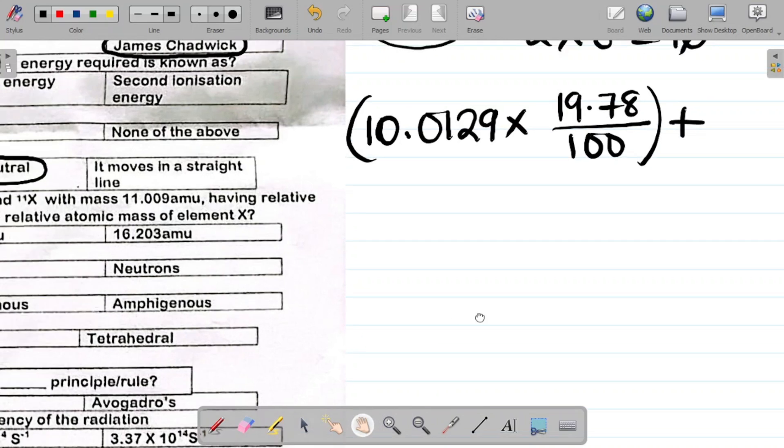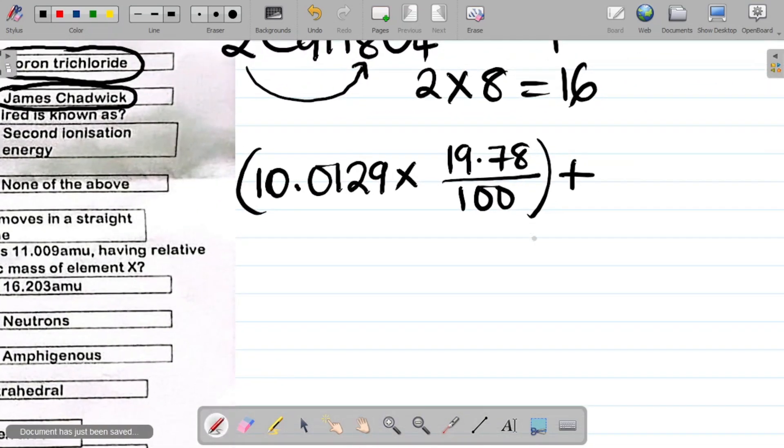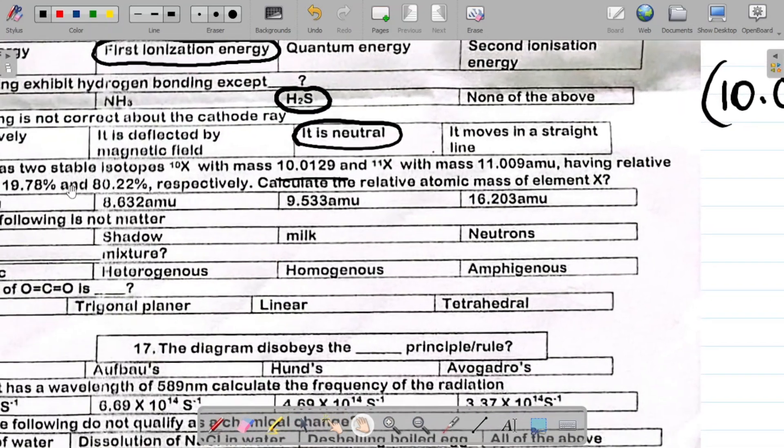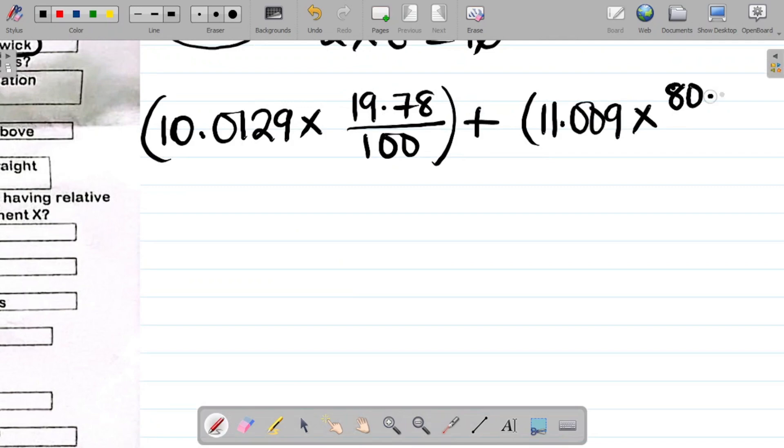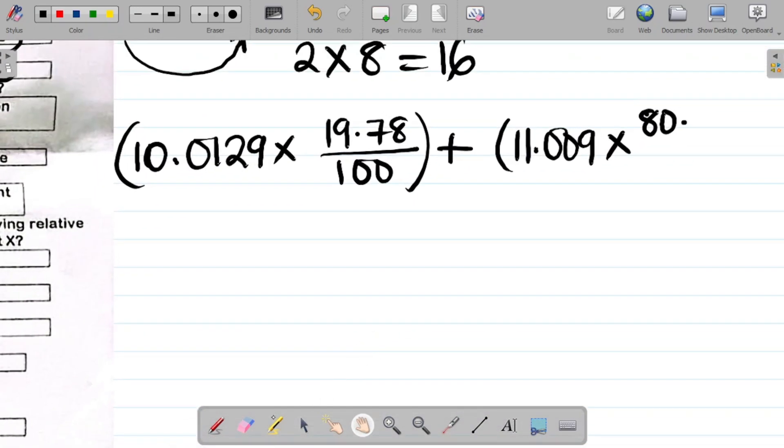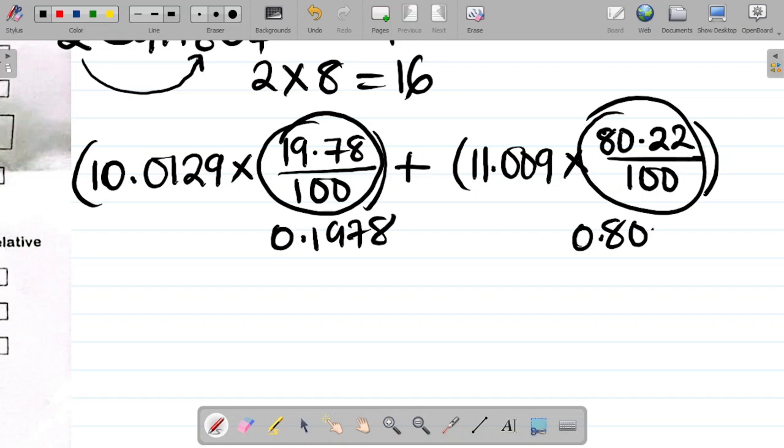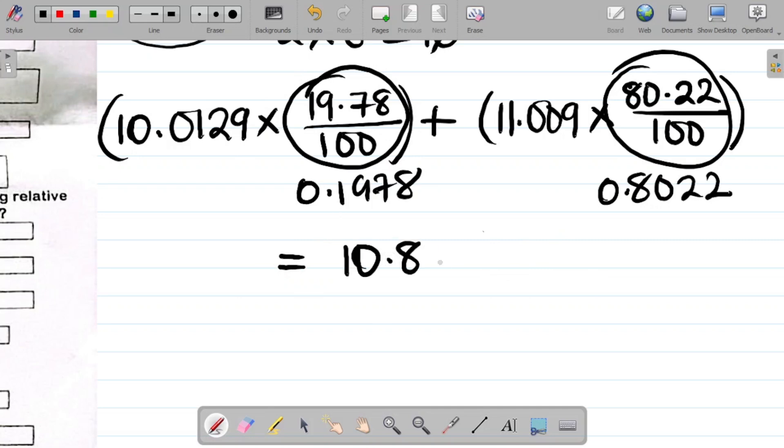This plus, pick up the next one there. The next one there would be 11.009, times 80.22, that's 80.22 all over 100. You could express this one here as a decimal first, 0.1978, and this would be about 0.8022. Then you can punch this. If I punch this, my answer gives me about 10.812 approximately.